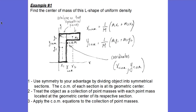Let's look at an example using our strategies to find the center of mass of this L-shaped object. I'm going to break it down into sections and treat each section as a point mass located at that section's center of mass. I'll break it down into symmetrical sections so the center of mass of each section can easily be found. I've chosen to break it into two rectangles — one large rectangle and one smaller rectangle — and the center of mass of each rectangle is at its geometric center. I treat these two rectangles as two point masses, one located here and one here, and then use my point mass equations to find the overall center of mass.